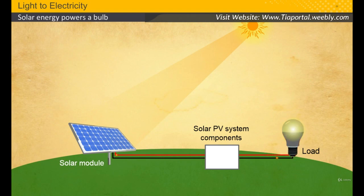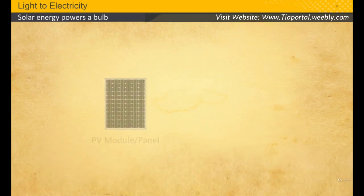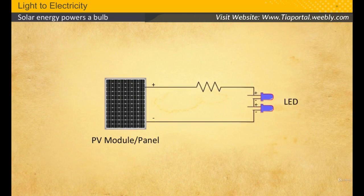You can perform an experiment to understand the working of a module using LEDs. For this, take a 5 watt solar PV panel and connect two LEDs to it in series. Place the module in sunlight.